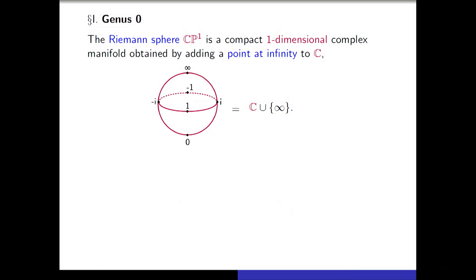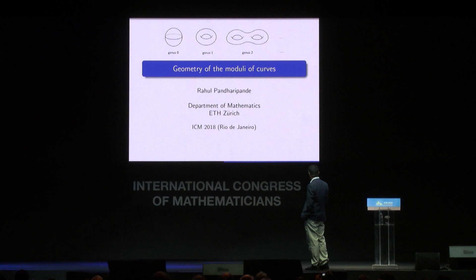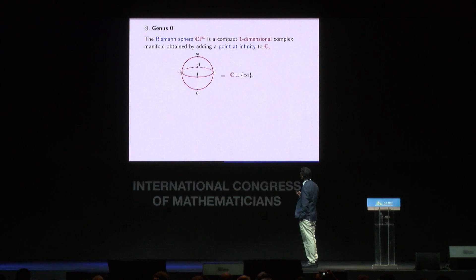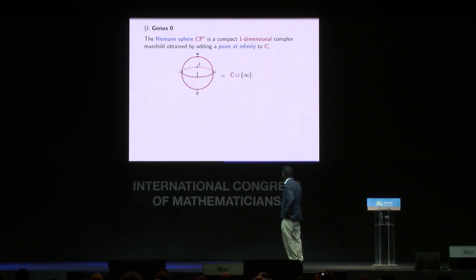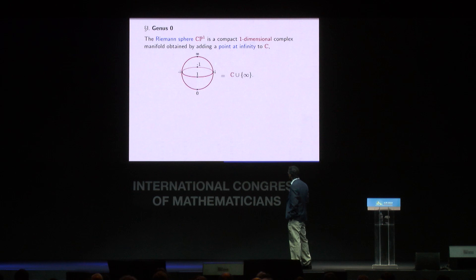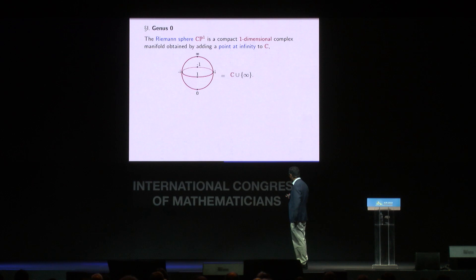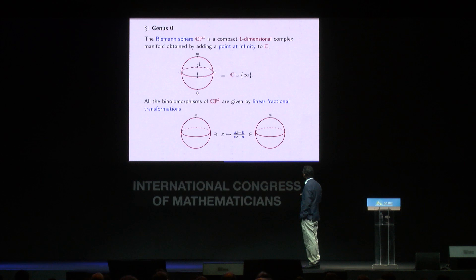We'll start with the simplest case: the Riemann sphere. It has already appeared in the lectures. The Riemann sphere is a compact one-dimensional complex manifold, obtained by adding a point at infinity to the complex numbers. It is depicted as a sphere, where zero is the origin and the southern hemisphere is the unit disk. Many mathematicians first encounter the Riemann sphere in a course on complex variables. It is not just a topological sphere of genus 0, but it also has a theory of holomorphic functions and holomorphic automorphisms, and the automorphisms are given by linear fractional transformations.